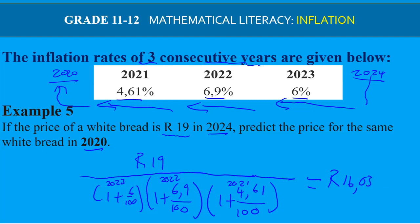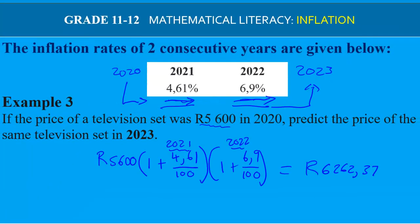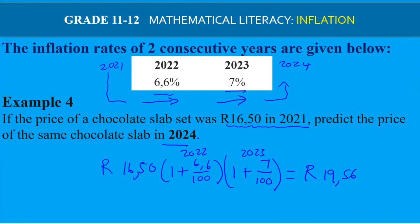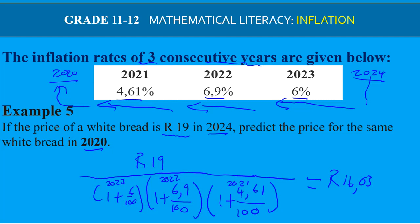This is a very useful method. To predict a price in the future, multiply by a bracket for each year in between, as in examples three and four. To predict a price in the past, take the current price and divide by a bracket for each year going back. I hope this video was useful — thank you.